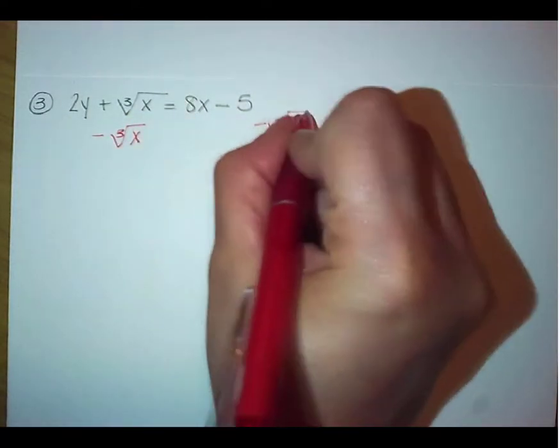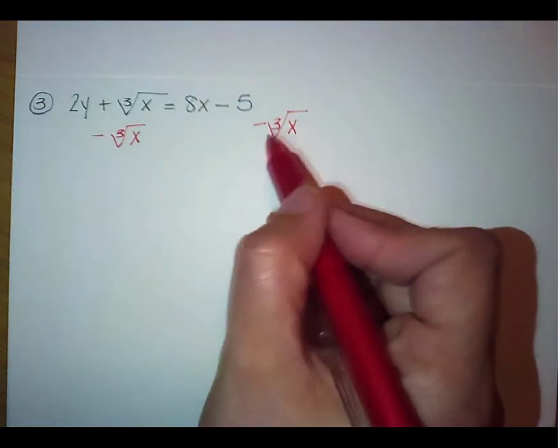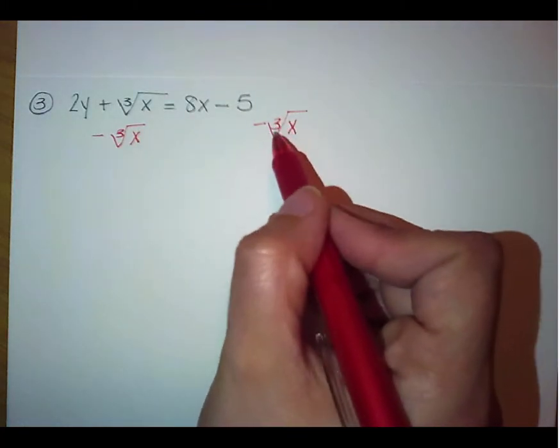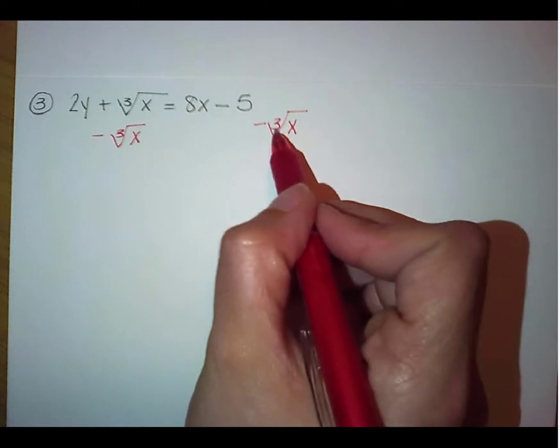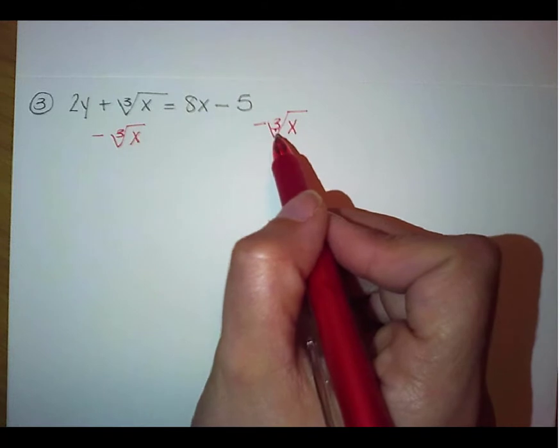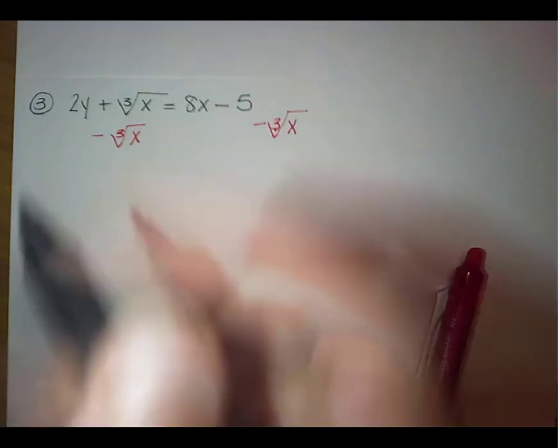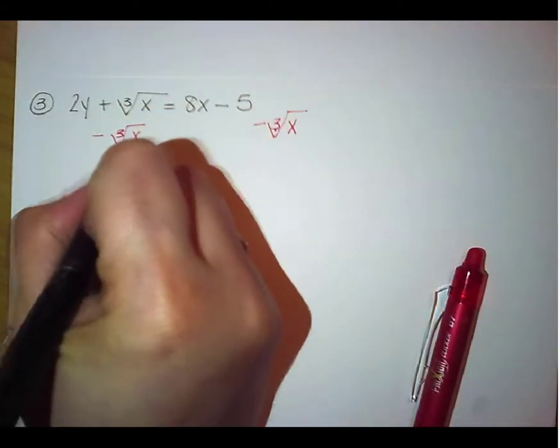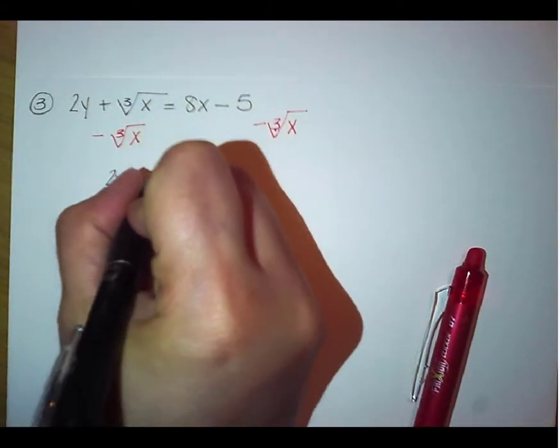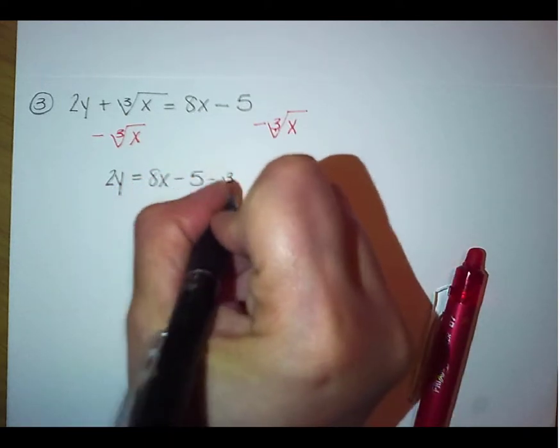please make sure that you continue to write that little 3 in the v here of the root, because that little 3 is what's telling me that this is a cube root. And if I forget to write it, that changes this to a square root, and that's not the same value. So make sure you keep that little 3. It's very important. So we're going to get 2y equals 8x minus 5 minus the cube root of x.